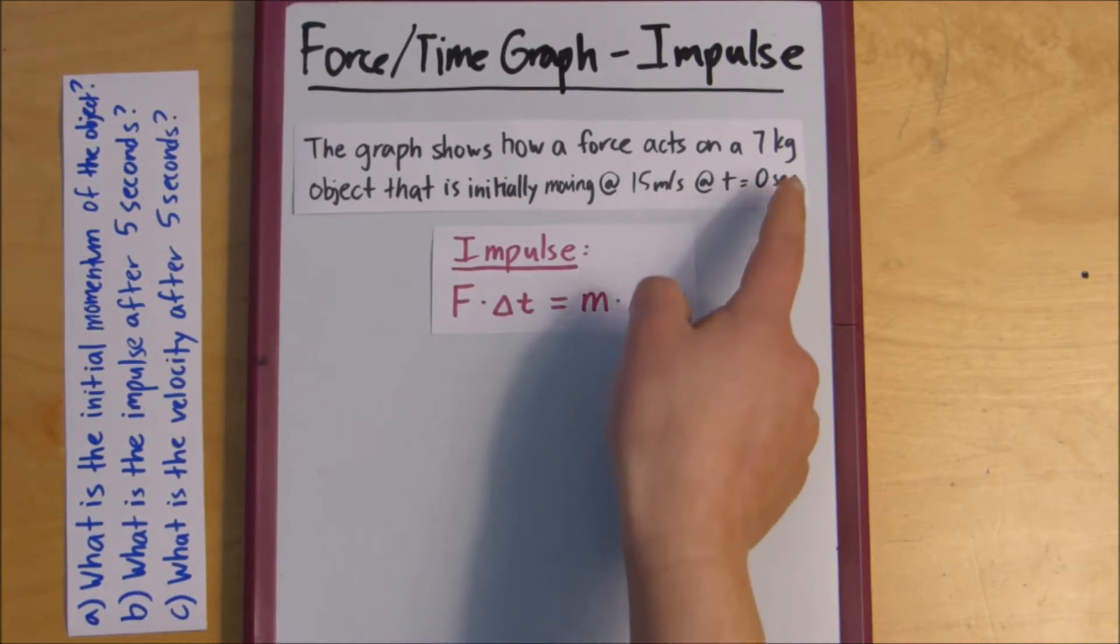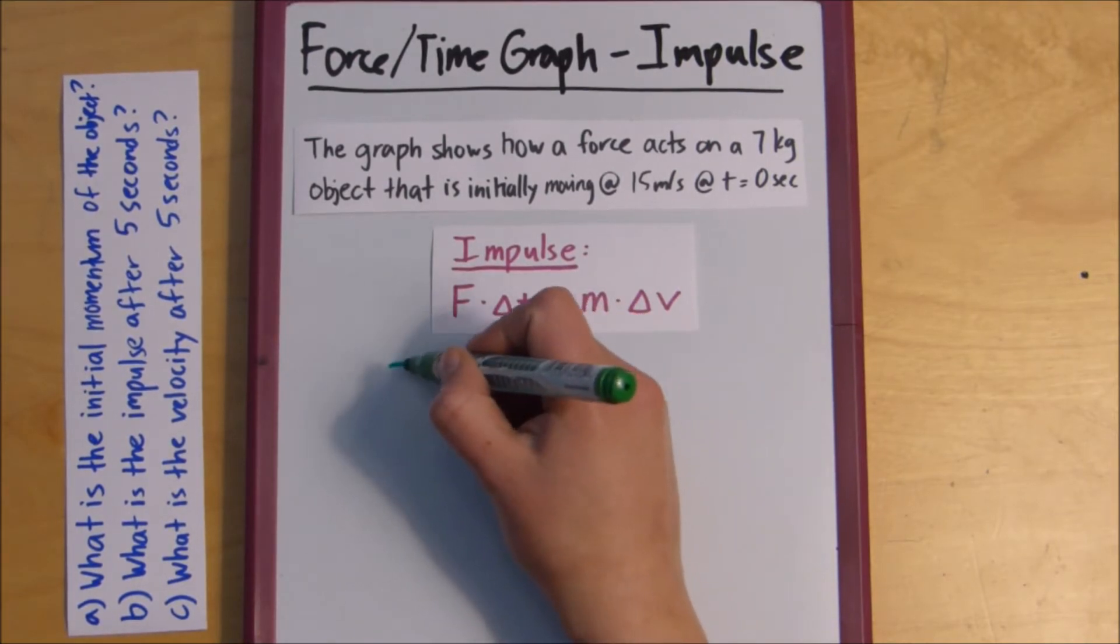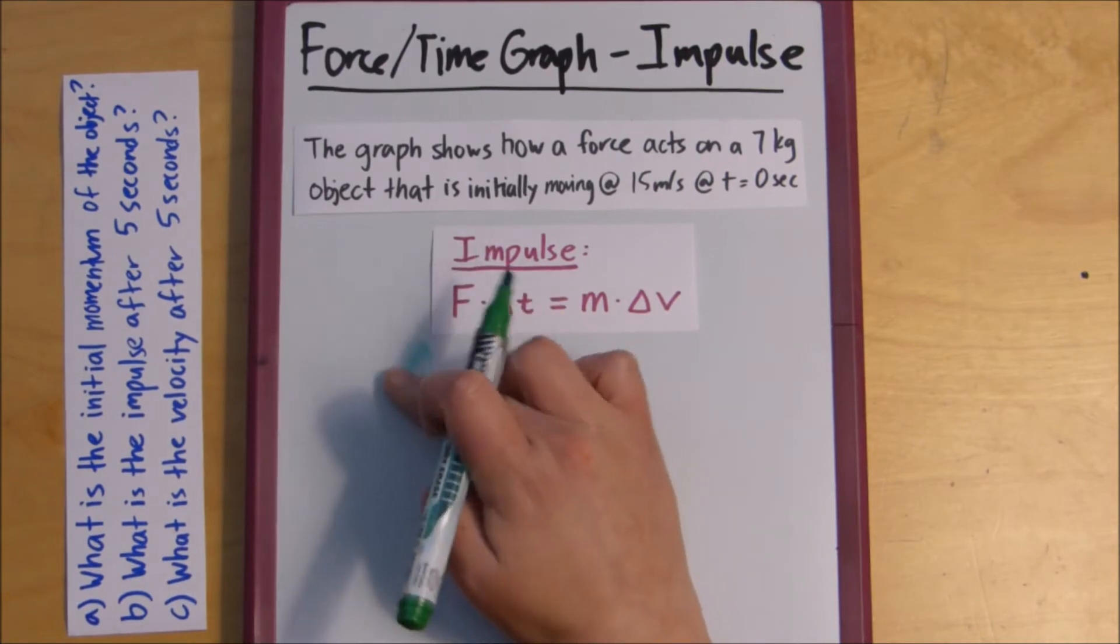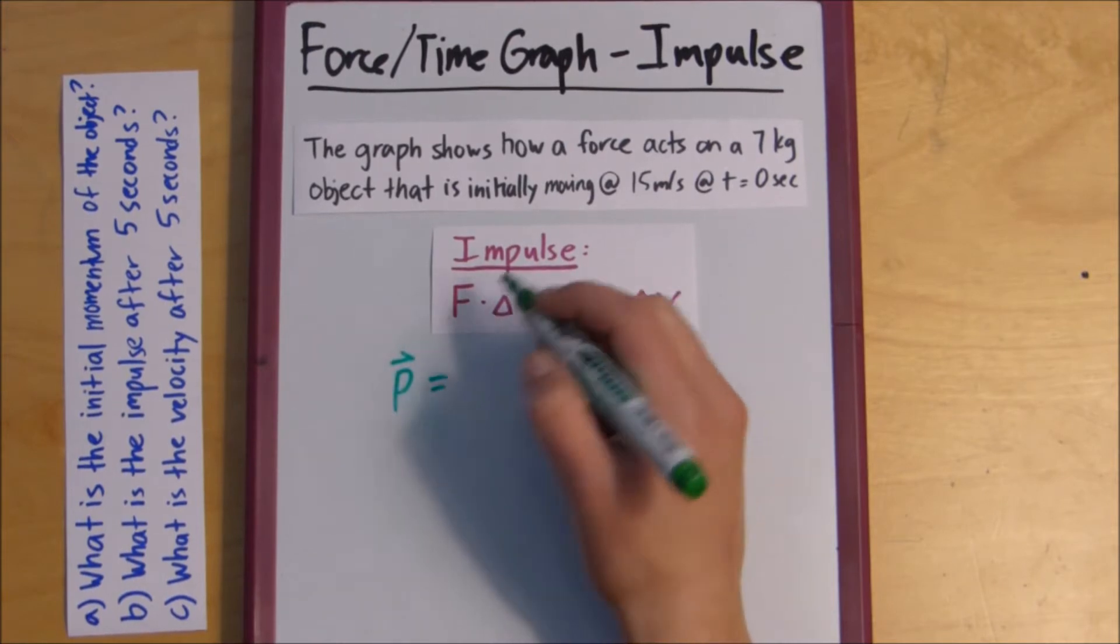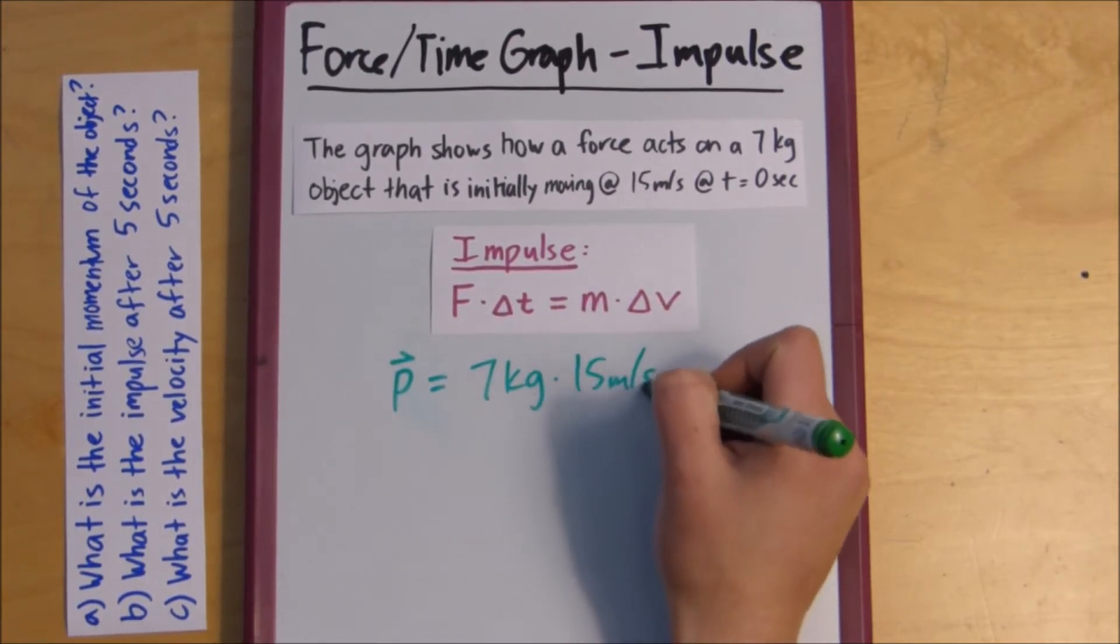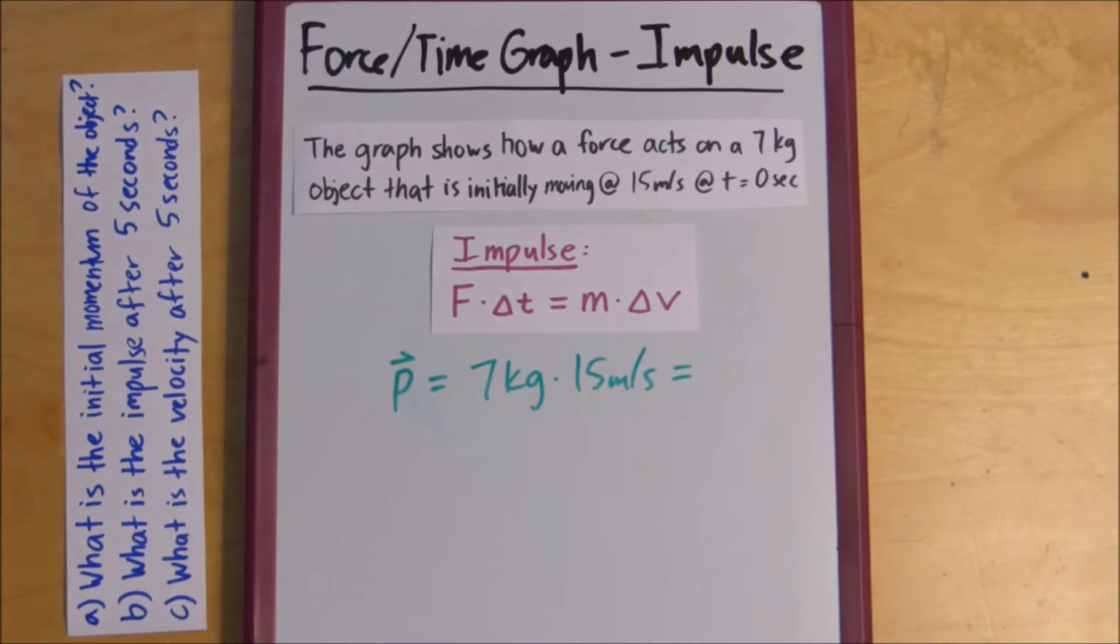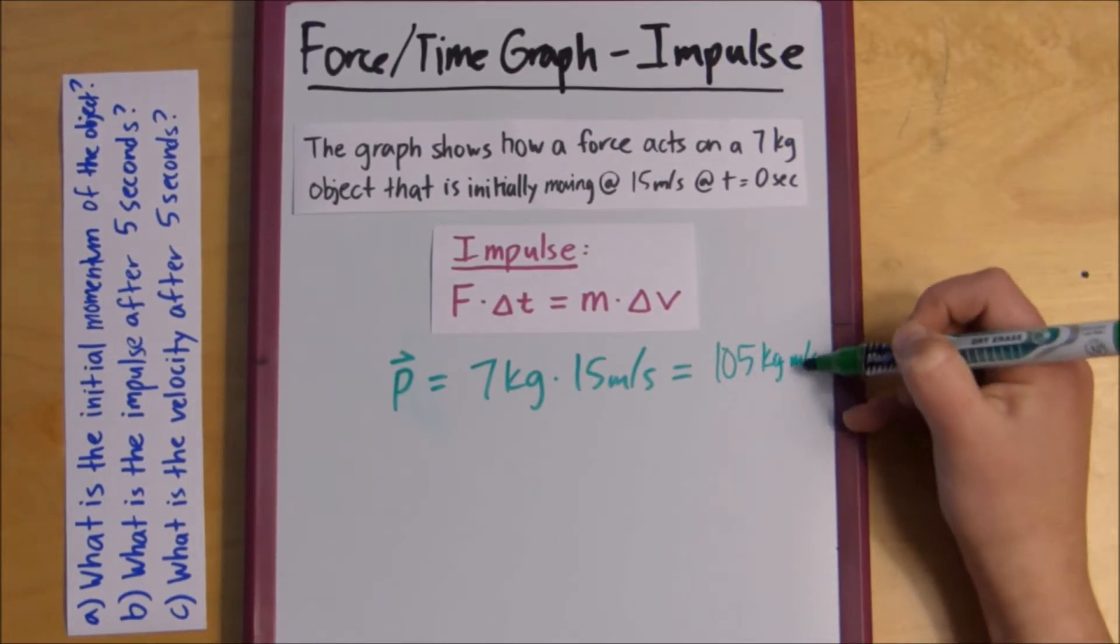So, here I'm seeing a mass and a velocity. So, I think we can use this side of the equation. So, our impulse would be, rather, sine for impulse is P, is 7 kilograms times 15 meters per second, which equals 105 kilograms times meters per second.